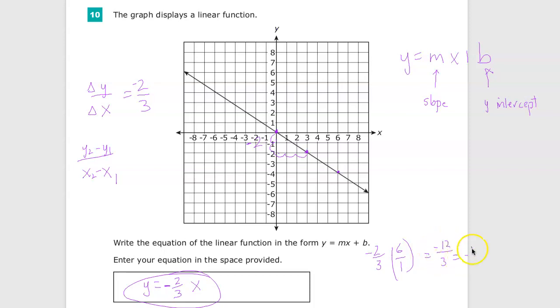Negative 12 over 3 gives me negative 4. So I substituted a value of 6. I should get negative 4. And I do. So I know it matches. It's just a good way to test it as you work through the problem.